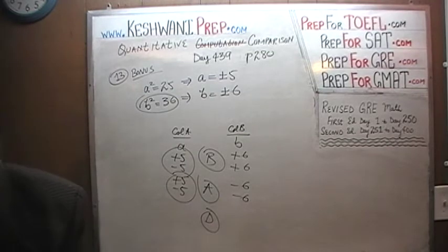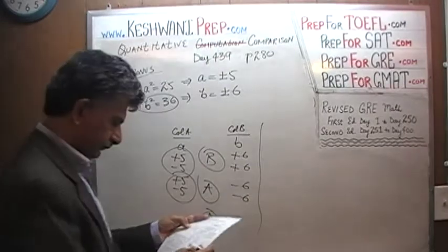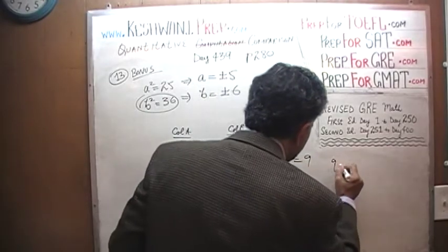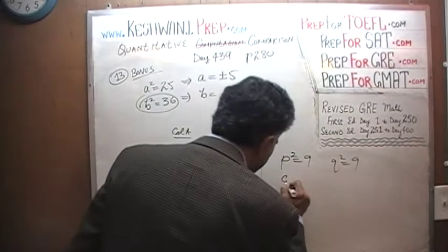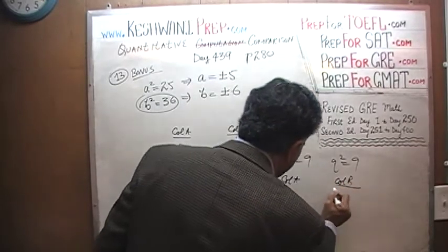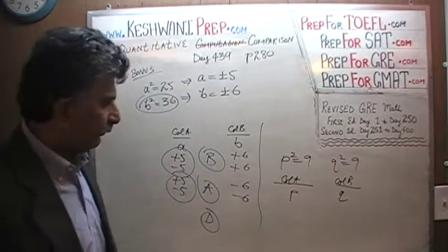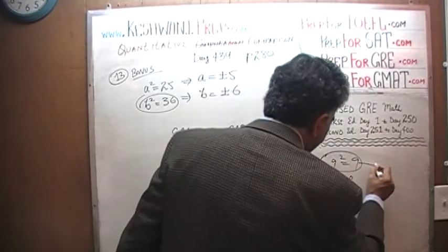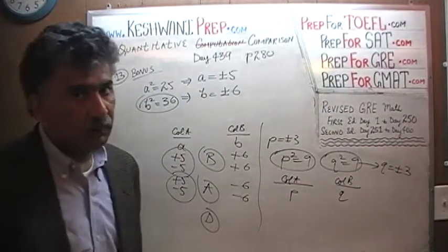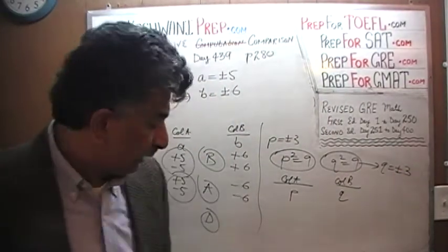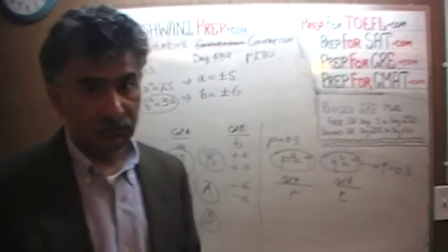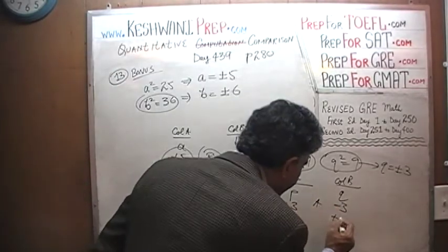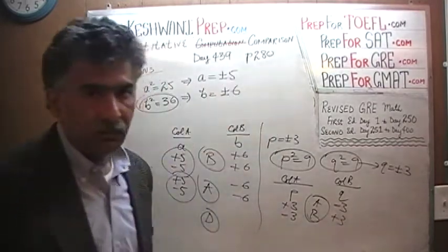Let's do one more. We are told that p squared equals 9 and q squared equals 9 as well — the same exact situation. Column A, column B — we are being asked to compare p versus q. Knowing that p squared equals 9, that tells us p has to be either positive 3 or negative 3. Similarly, q squared equals 9 means q has to be either positive 3 or negative 3. We do not know which value p and q take — they can each be positive 3 or negative 3. The answer is D.